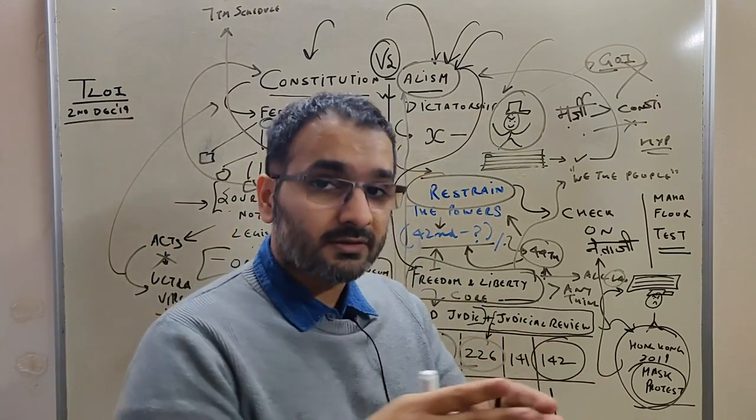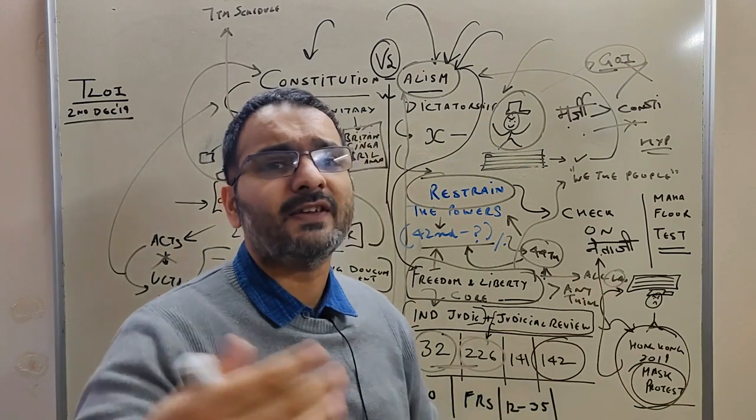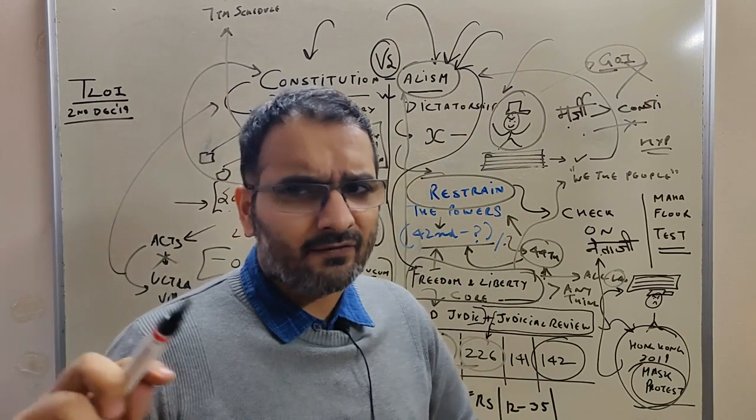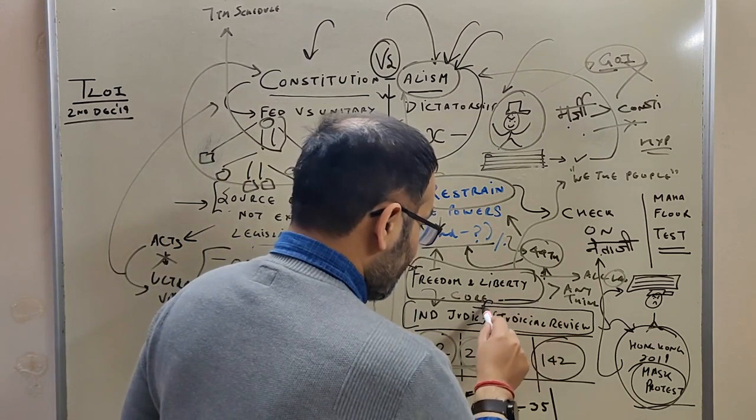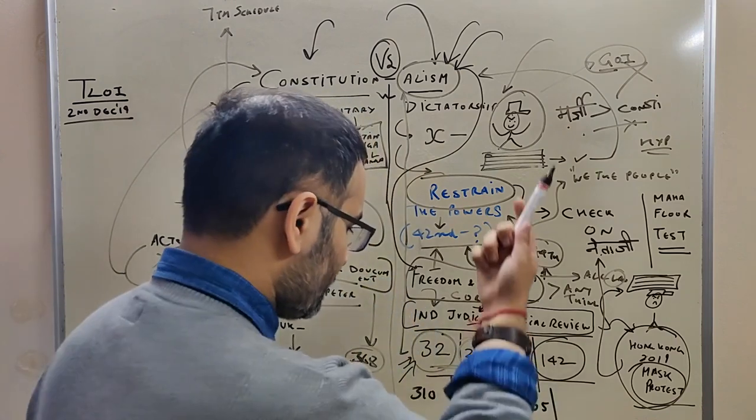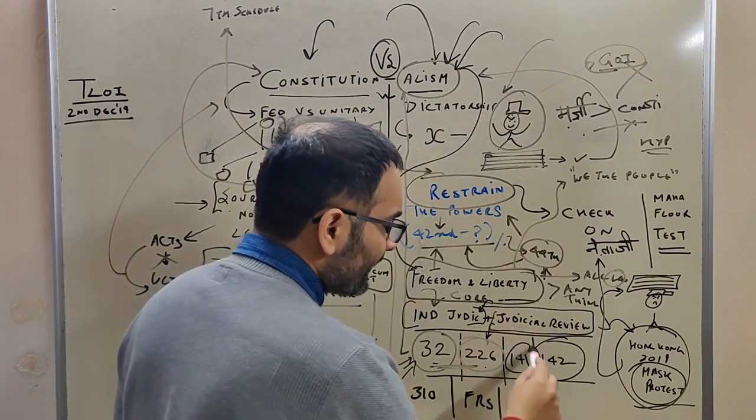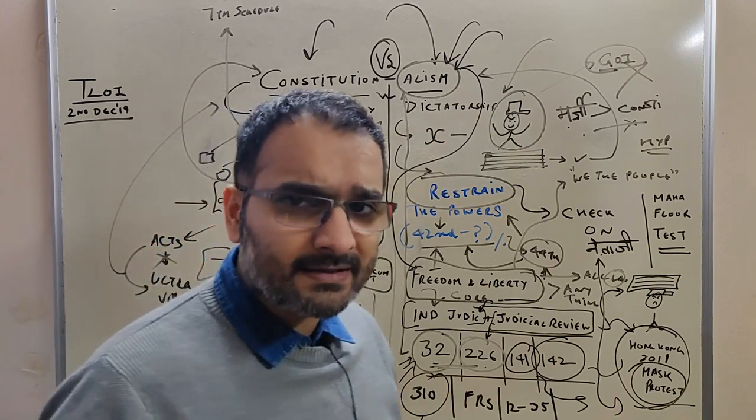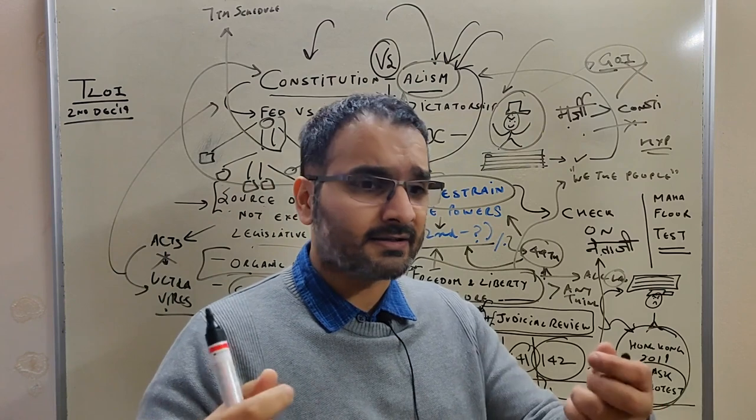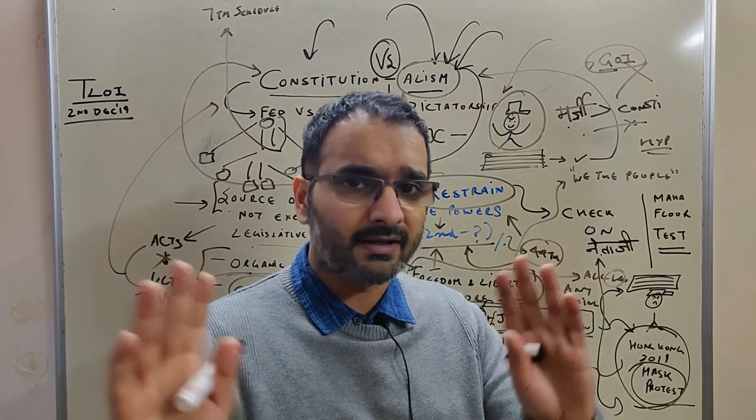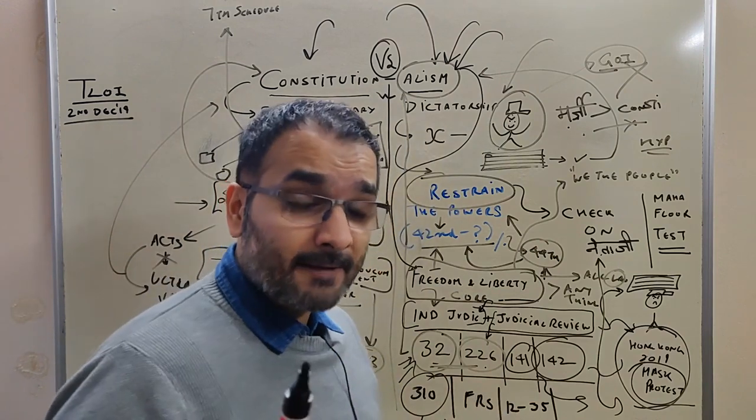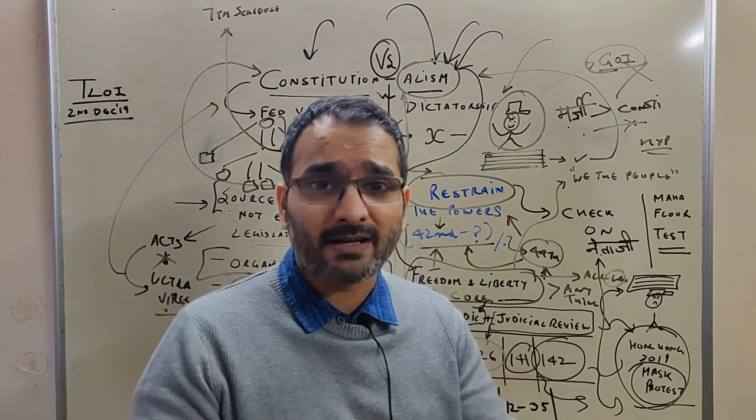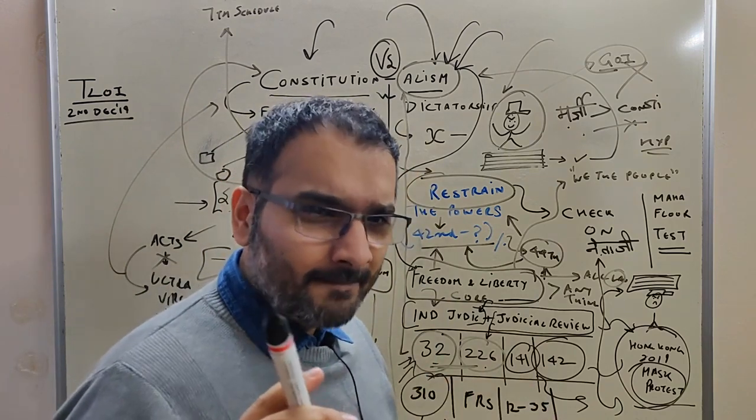You'll have to bring recent examples from current affairs because this keeps happening—the court declares some act void. For example, recently the court removed Section 377, removed 497. It depends on whether the independent judiciary can do its work. Not everything the government wants will happen. That is the core essence. So you give examples: 32-226, 141, 142's power to do complete justice. Then one more example is Article 310: doctrine of pleasure of the President. Does that mean all government officers can be dismissed at any time under the pleasure of the President? No, that won't happen. Pleasure of the President obviously has exceptions—like the Attorney General, UPSC Chairman, and others like Governors who are explicitly mentioned. Everyone else works according to their tenure. This is a very tricky question from polity, from 310.